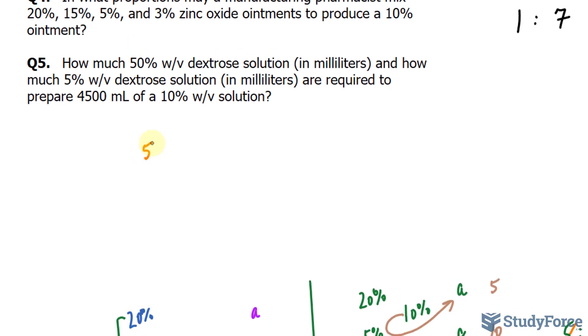So again, making some room. We have 50% and 5%, and our desired strength is 10%. We are looking for A and B, those are the parts of each. 10 take away 50 makes 40, so 40 parts of the 5%. And 10 minus 5 is 5 parts of the 50%. So our ratio is 5 to 40, and we can reduce this down to 1 and 8, and altogether that's 9 parts. 8 plus 1 is 9.